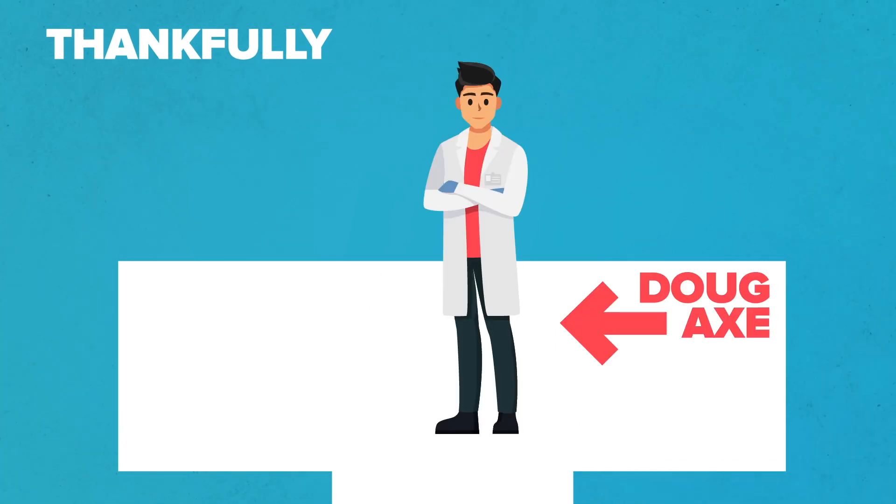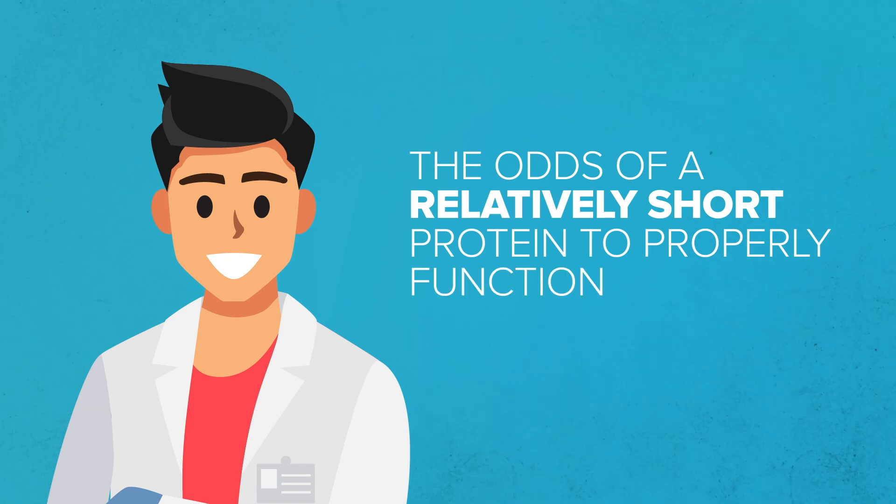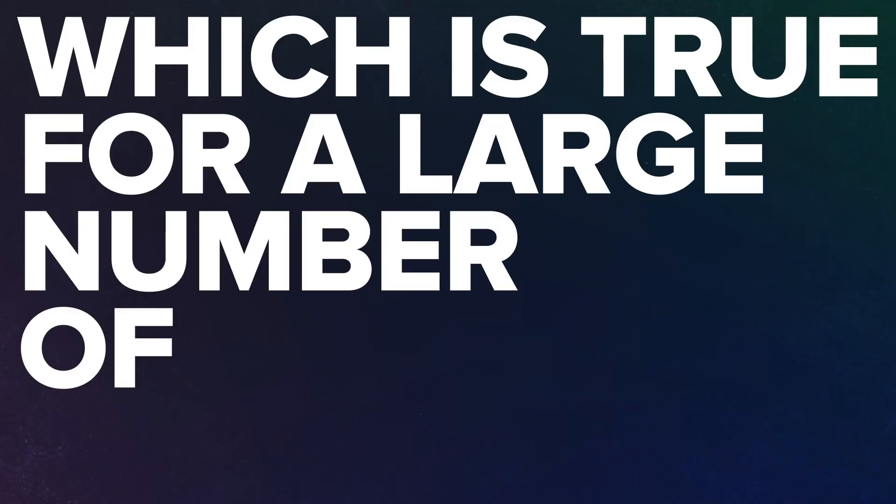Thankfully, Doug Axe, a molecular biologist, has, and he found that the odds of a relatively short protein to properly function are less than 1 in 10 to the 77th, which is true for a large number of proteins. So, that's a 1 with 77 zeros.